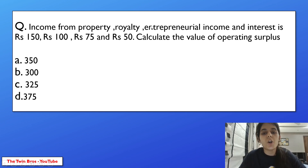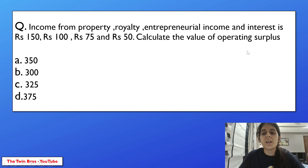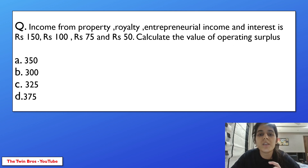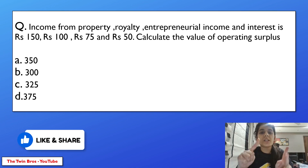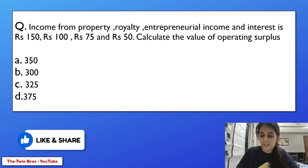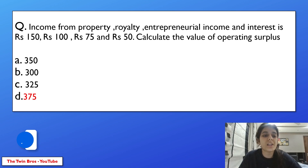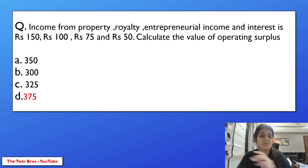Numerical question: income from property is 150, royalty is 100, entrepreneurial income is 75, and interest is 50. Calculate the value of operating surplus. Operating surplus is the sum of income from property, royalty, entrepreneurial income, and interest. Adding them all: 150 plus 100 plus 75 plus 50 equals 375. Option D is your correct answer.